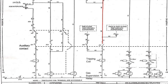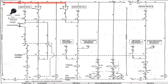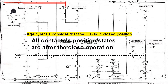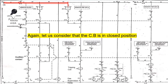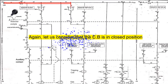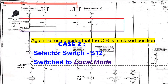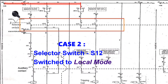Now let us see the tripping circuit in local mode. For open circuit operation in local mode, let us consider that the circuit breaker is in closed position and the contacts shown here are after the circuit breaker closes. In local mode, we previously saw the selector switch S12 connected in remote mode. Now let us consider case 2 where the selector switch is connected in local mode. Then the connection of S12 will be something like this.